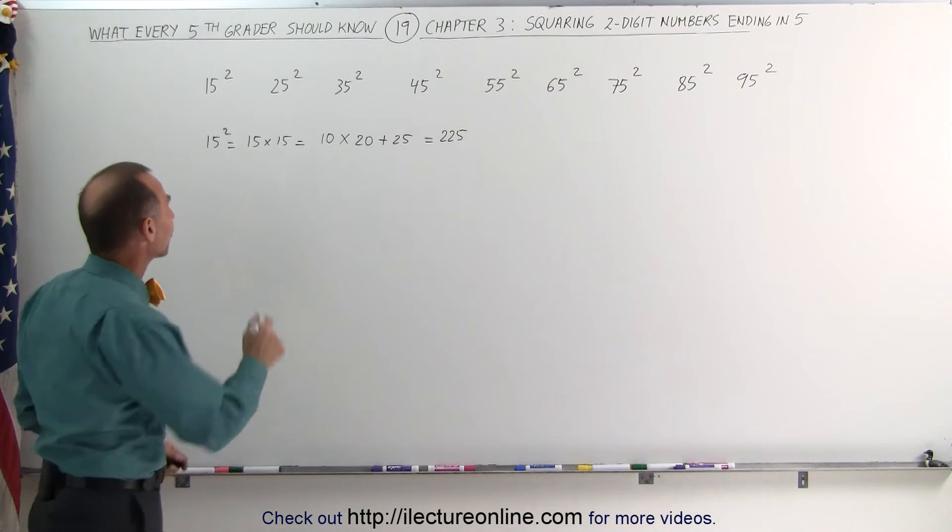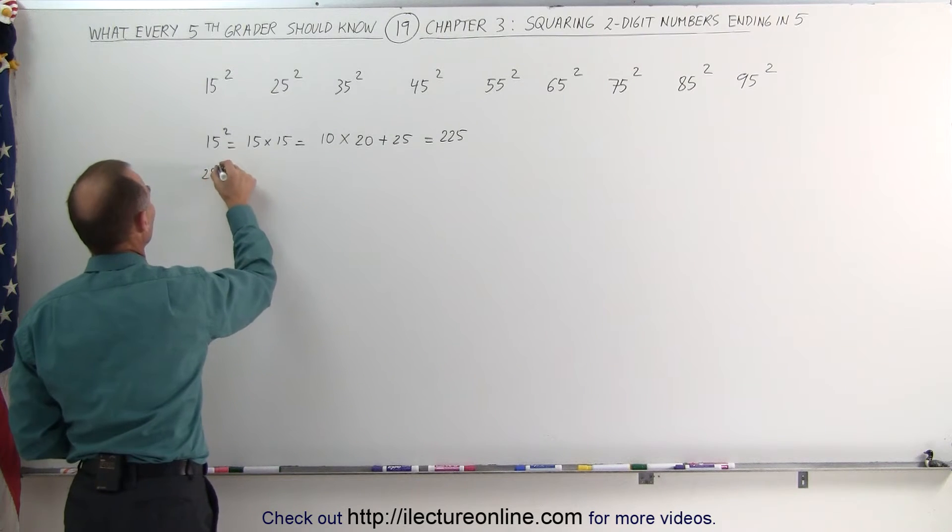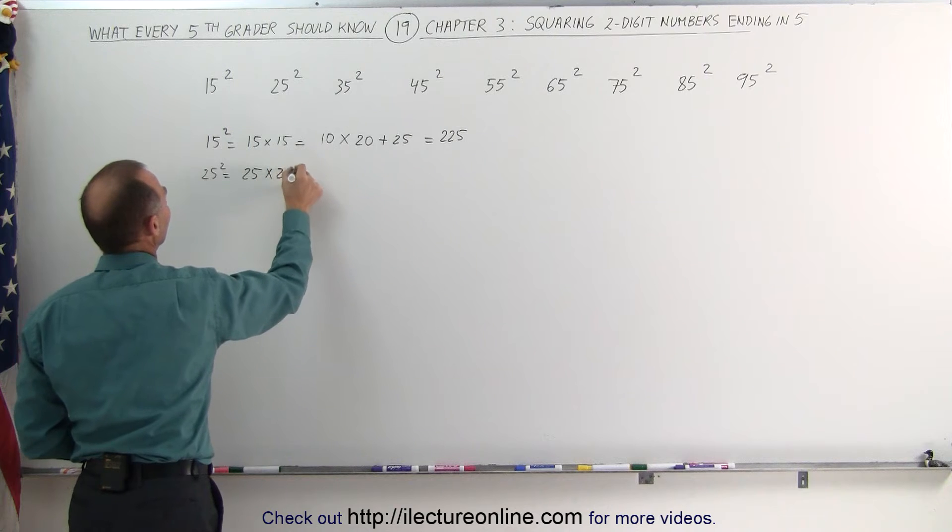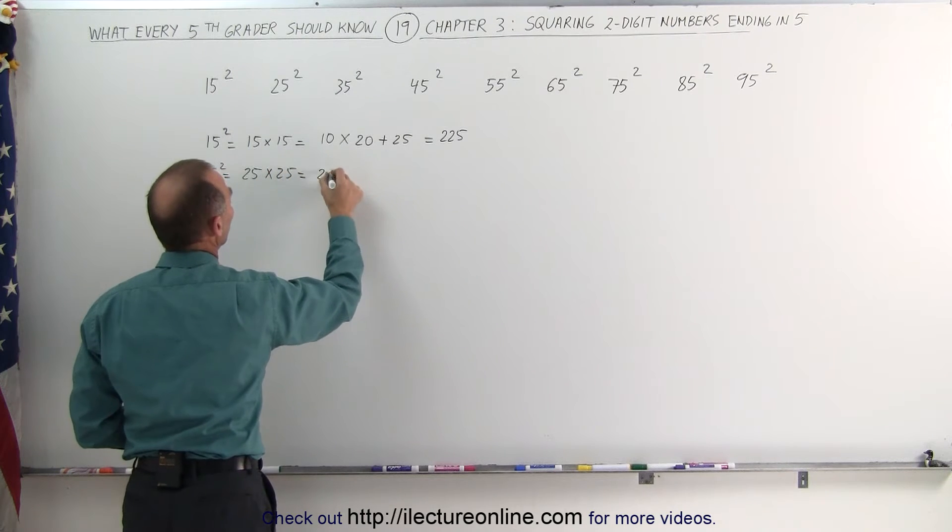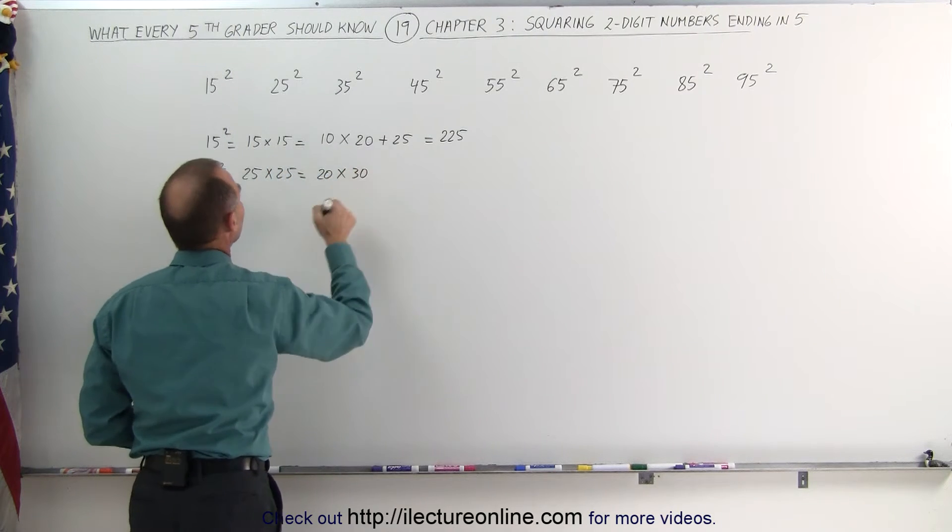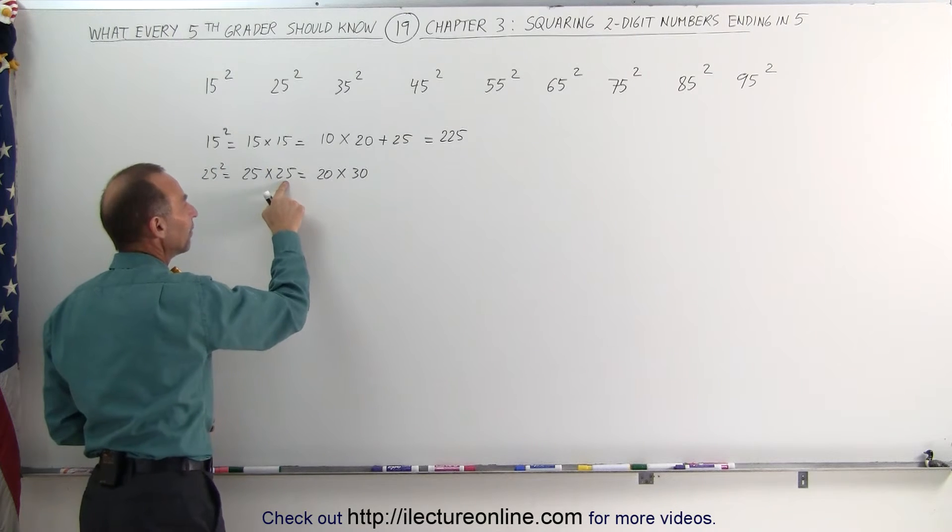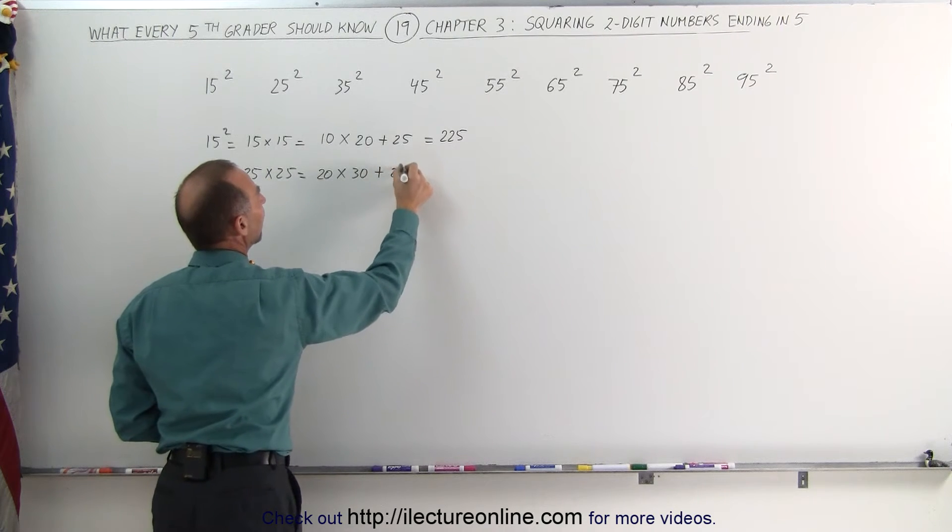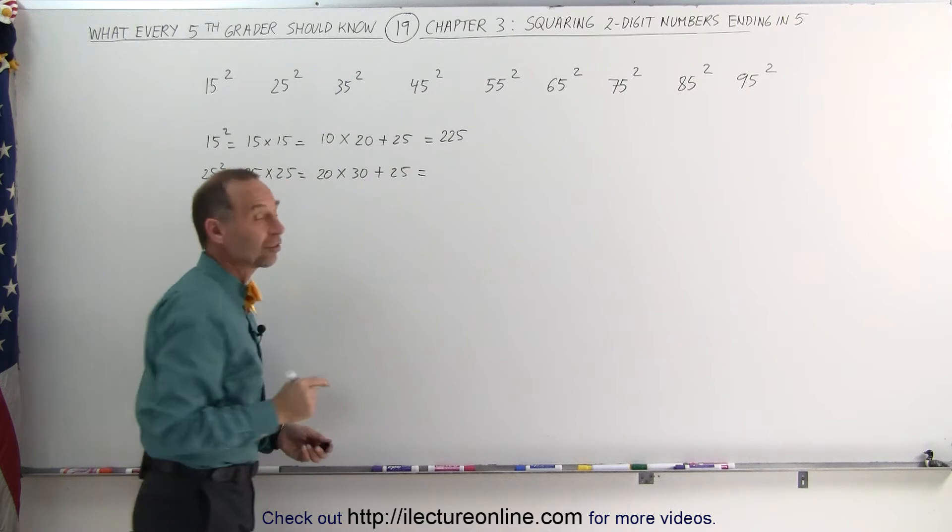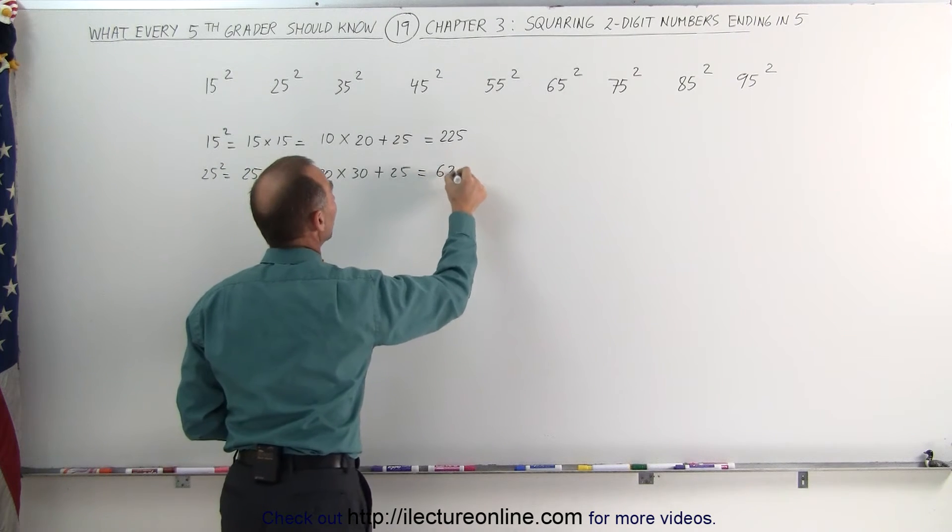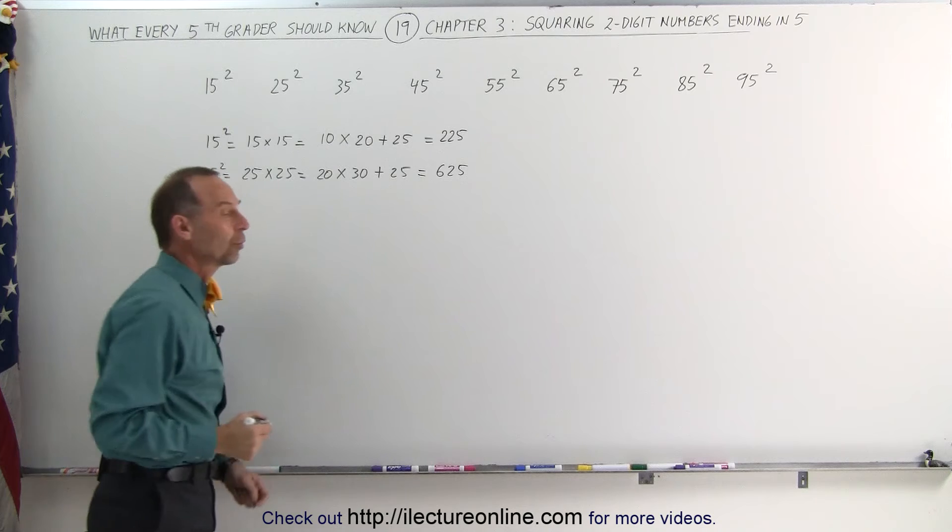We use the same technique for 25 squared. 25 squared is equal to 25 times 25, which is the same as multiplying 20 times 30. Again, I subtracted 5 and added 5, and then I add 25 to that. 20 times 30 is 600, add 25 gives you 625, which is 25 squared.